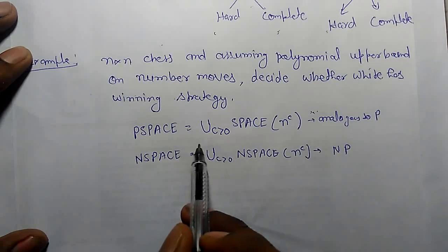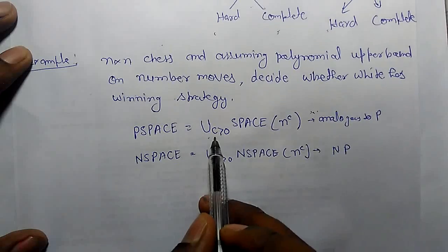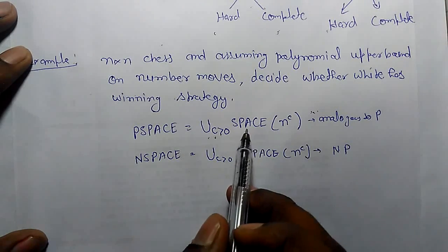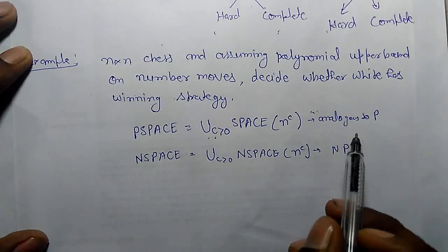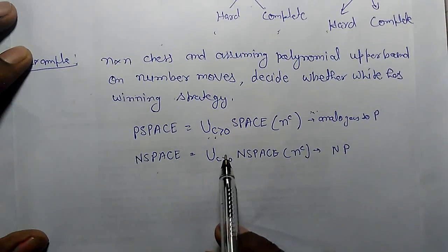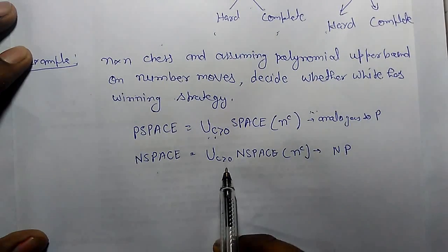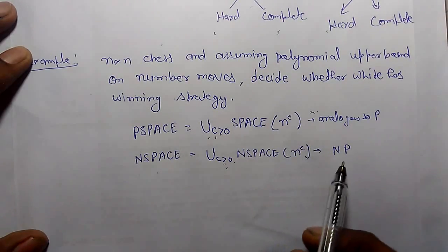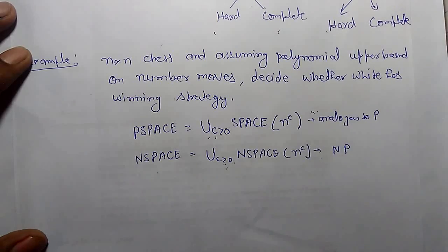PSPACE is equal to union over c greater than or equal to 0 of SPACE(n^c), analogous to P. And NSPACE is equal to union over c greater than or equal to 0 of NSPACE(n^c), that is analogous to NP.